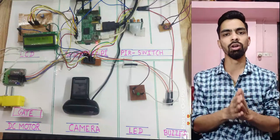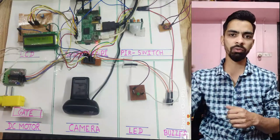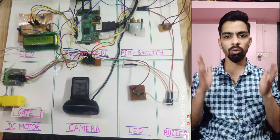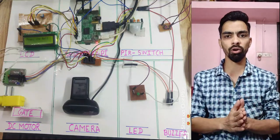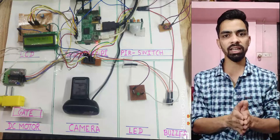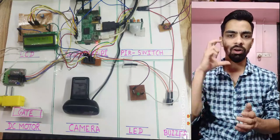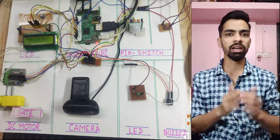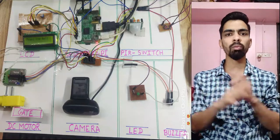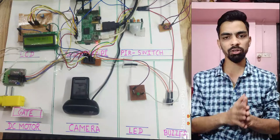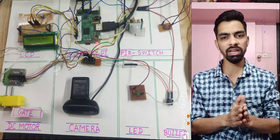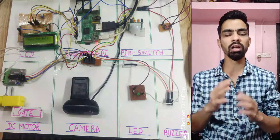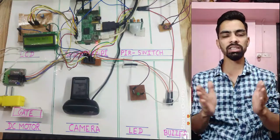The PIR sensor plays an important role here. If a visitor presses the bell and no one is inside the home, the PIR sensor detects the absence. In that case, the Raspberry Pi captures a real-time image of the visitor and sends that live image to the user's email ID, so the user can check who visited in their absence. If someone is detected inside the home by the PIR sensor, the email with the live image is not sent.